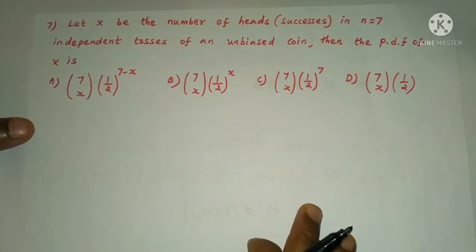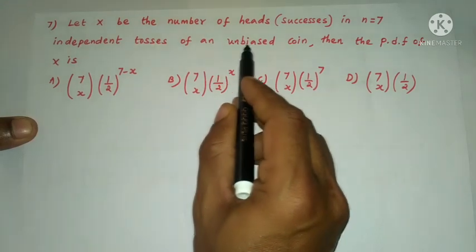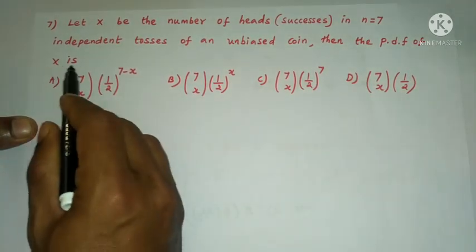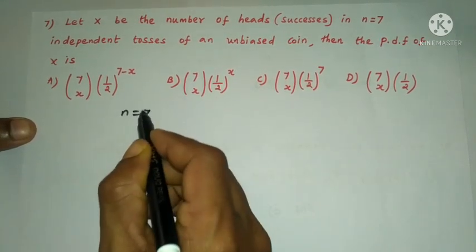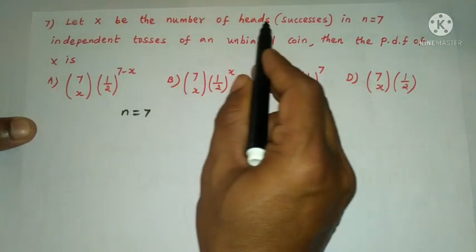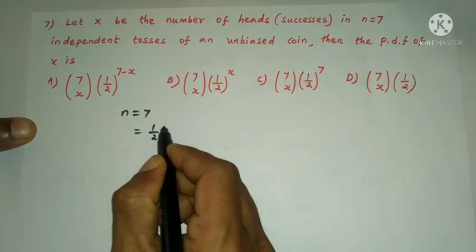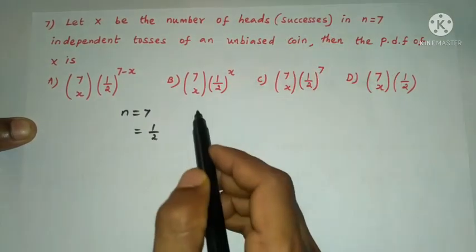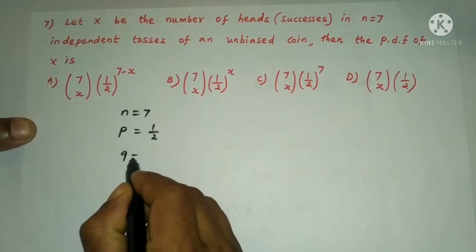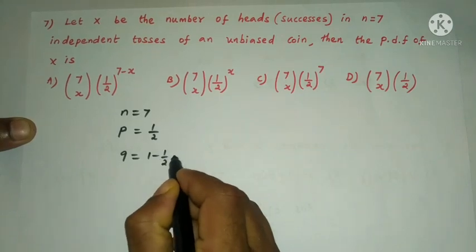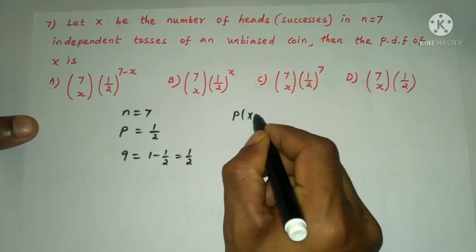Next question: let X be the number of heads (successes) in n = 7 independent tosses of an unbiased coin. Then the PDF of X is — using the binomial distribution with n = 7.